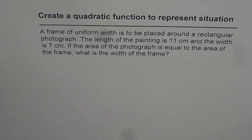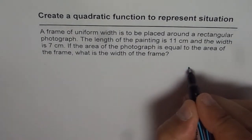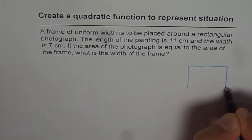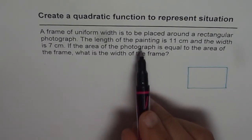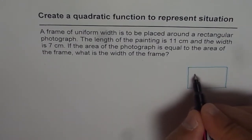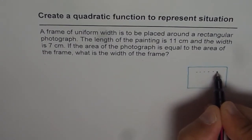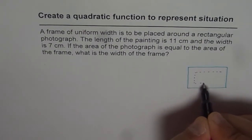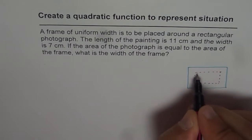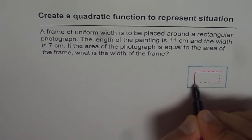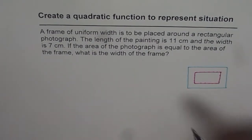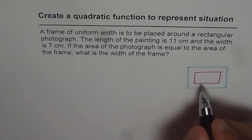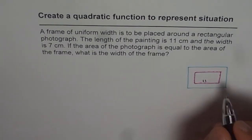Let's first sketch and then we will derive the equation. Let us say that this is our frame which is placed around a photograph — which in this case is a painting. This is around a photograph where we have equal borders on all the sides. That is the photograph. Now, the length of this painting, which is the photograph, is 11 cm by 7 cm.